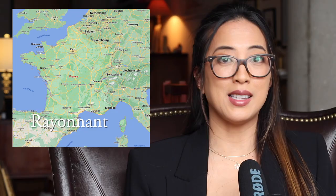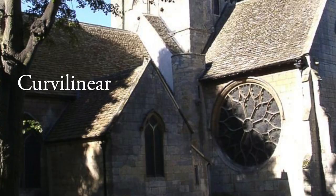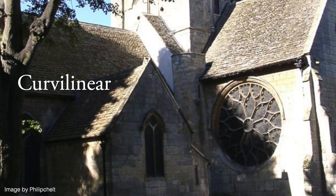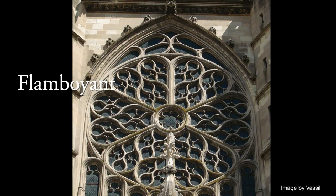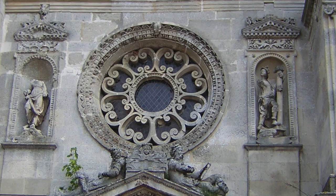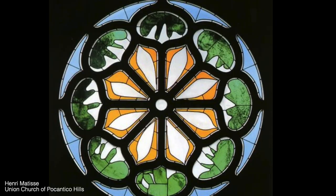The most famous one is that of Notre Dame de Paris. From this rayonant style were born many more, such as the curvilinear and the flamboyant. From here on, rose windows would continue to spread to the rest of the world. They underwent periods of destruction, renaissance, and modernization, and got restored over and over again — still living on today as religious relics.